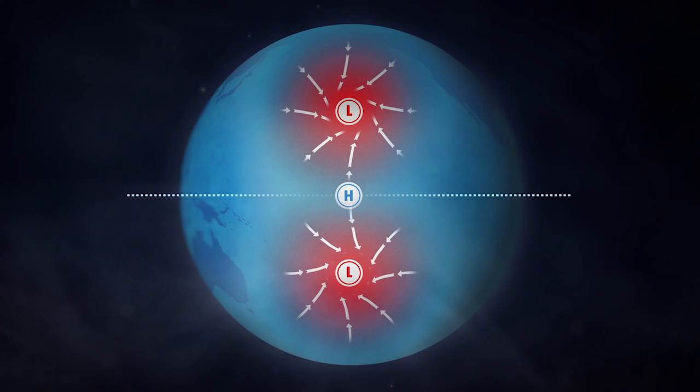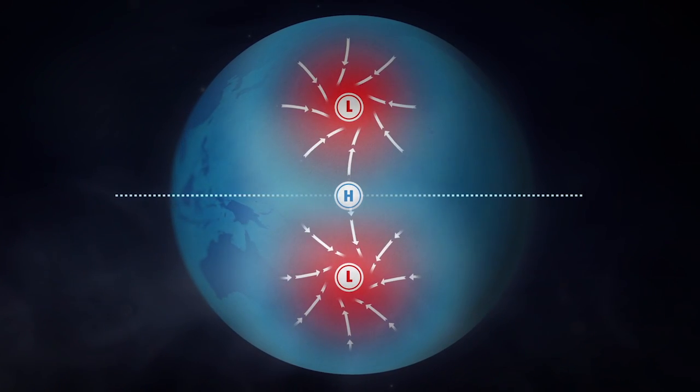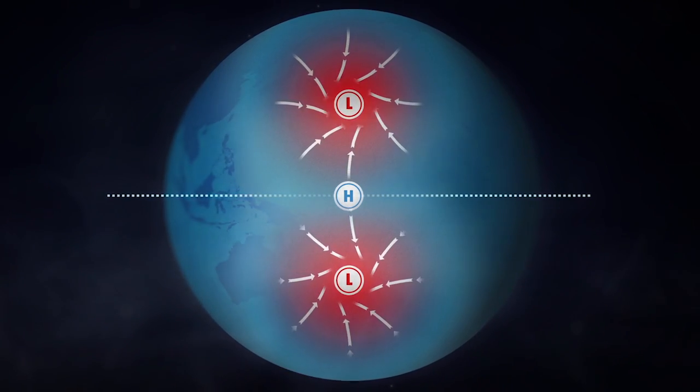But in the Southern Hemisphere, the Coriolis Force deflects air to the left, and storms rotate in the opposite direction.